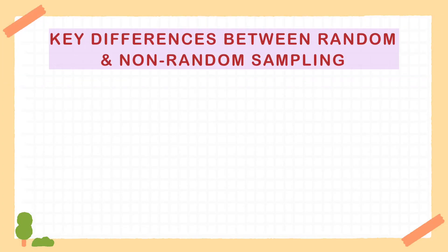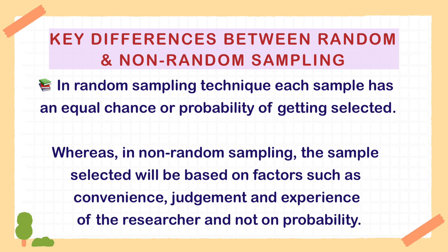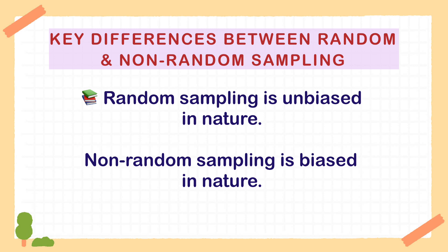Key differences between random and non-random sampling: In random sampling, each sample has an equal chance or probability of getting selected. Whereas in non-random sampling, the sample selected will be based on factors such as convenience, judgment, or experience of the researcher, and not on probability. Random sampling is unbiased in nature. On the other hand, non-random sampling is biased in nature.